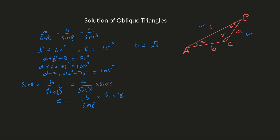Plugging in all the values: b is the square root of 6, times sine of gamma which is 15 degrees, over sine of beta which is 60 degrees. Use your calculator to find the value of c, which comes out to approximately 0.73.